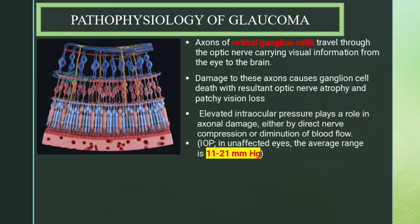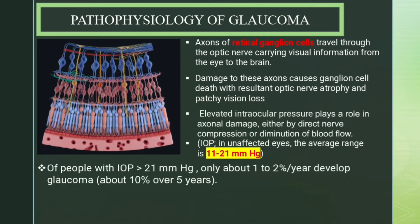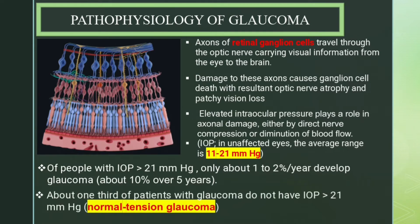Elevated intraocular pressure plays a role in axonal damage either by direct nerve compression or diminution of blood flow. Normally, the intraocular pressure in an unaffected eye is 11 to 21 mmHg. Of people with intraocular pressure more than 21 mmHg, only about 1 to 2 percent per year develop glaucoma — about 10 percent over five years. About one third of patients with glaucoma do not have IOP greater than 21 mmHg; this is known as normal tension glaucoma or low tension glaucoma.